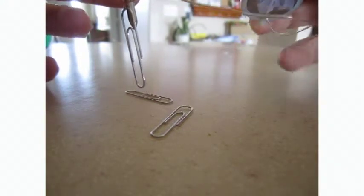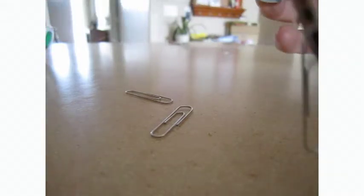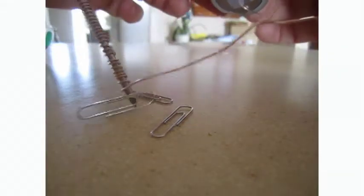So to understand how the metal nail became magnetic, we first need to understand what makes something magnetic. As you learned before, everything is made up of atoms, tiny little particles called atoms.